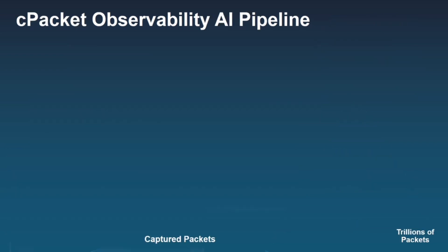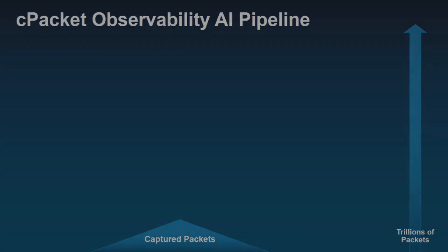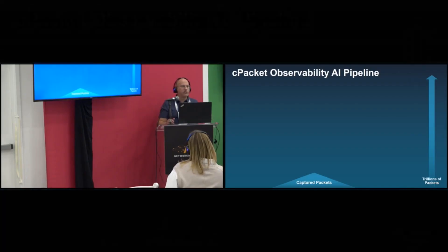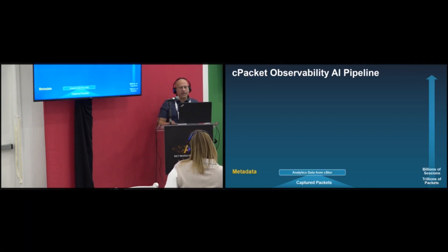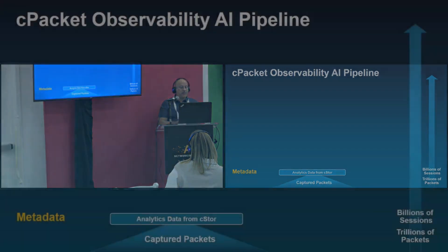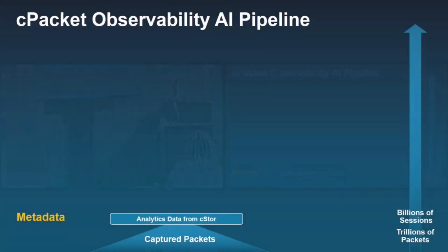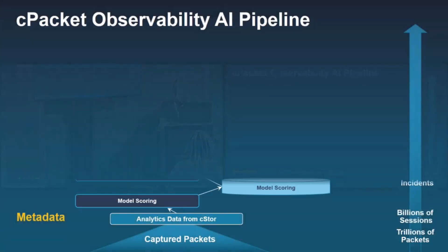So how do we get there? You start from a pipeline. The input for our engine is the captured packets. If you're thinking about a 100 gigabits per second capture, it generates trillions of packets every day. We extract analytics and metrics — the metadata — and that's still billions of sessions with hundreds of metrics per session.